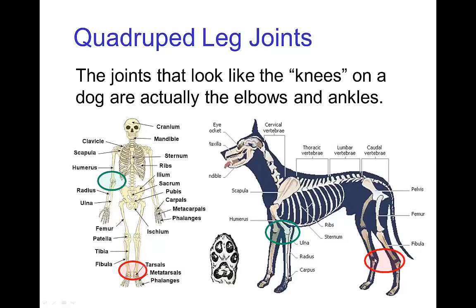And then in the back legs, this joint which is roughly in the middle of the leg is actually the ankle. Although we would expect the knee to be at that position, it's actually the ankle back there, which is why the rotation of this joint is opposite from the direction of rotation for a human knee.